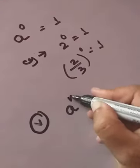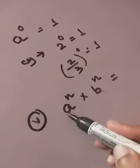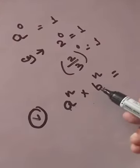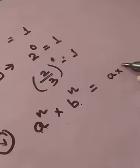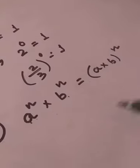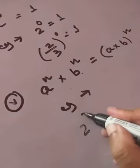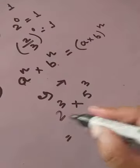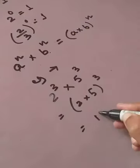This next law is very interesting. Here the bases are different — one term has base 'a' and another has base 'b' — but the powers are the same. In this case, you multiply the bases and keep the power common. Example: two to the power three multiplied by five to the power three equals ten to the power three.